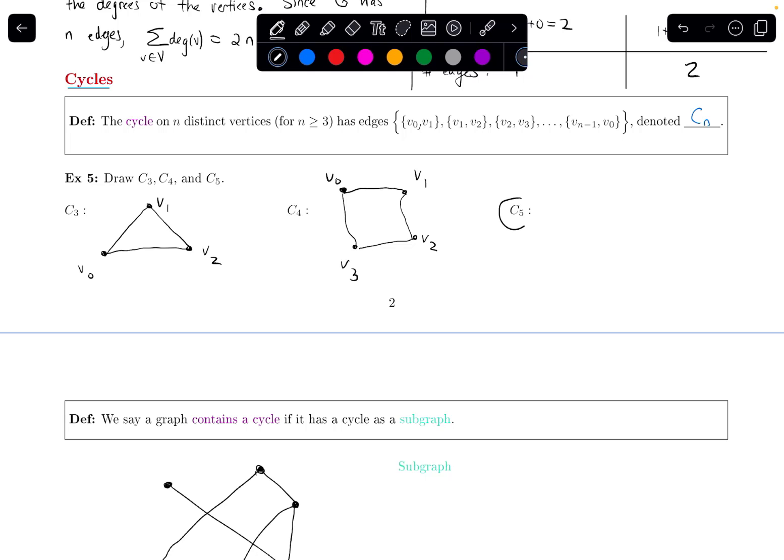And then finally, let's do a cycle on five vertices. So maybe V0 is here, maybe V1 is here, maybe V2 is over here. They don't always have to be arranged in a nice circular way. V3 and then the last one would be V4.